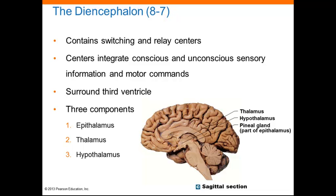The diencephalon contains switching and relay centers that integrate conscious and unconscious sensory information and motor commands. It surrounds the third ventricle and consists of three components. The epithalamus lies superior to the third ventricle and forms the roof of the diencephalon. The anterior part contains the choroid plexus. The posterior part contains the pineal gland, which is an endocrine gland that secretes melatonin.